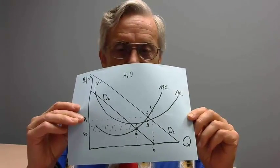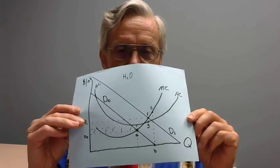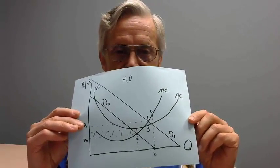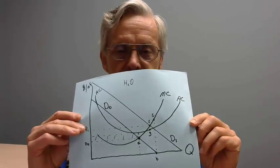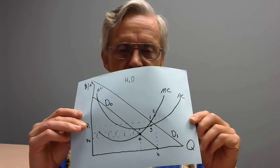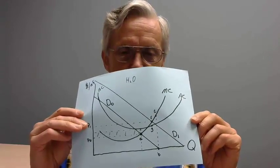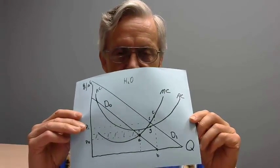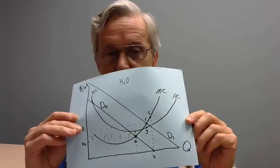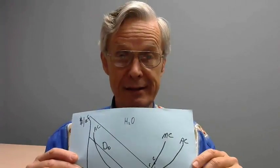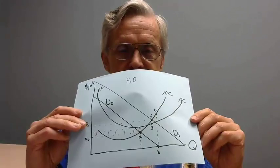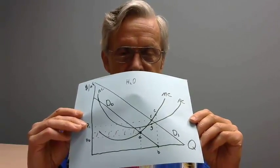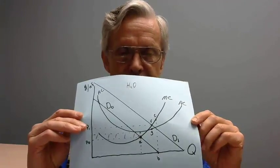At point B we say there's quite a deadweight loss — triangle A, B, C — because beyond point A, where price equals marginal cost, which is the efficient pricing level, each additional increment of water costs more than it's worth. Line segment A-B on the demand line indicates that the water past point A has a value lower than the opportunity cost of delivering it, from point A to C.